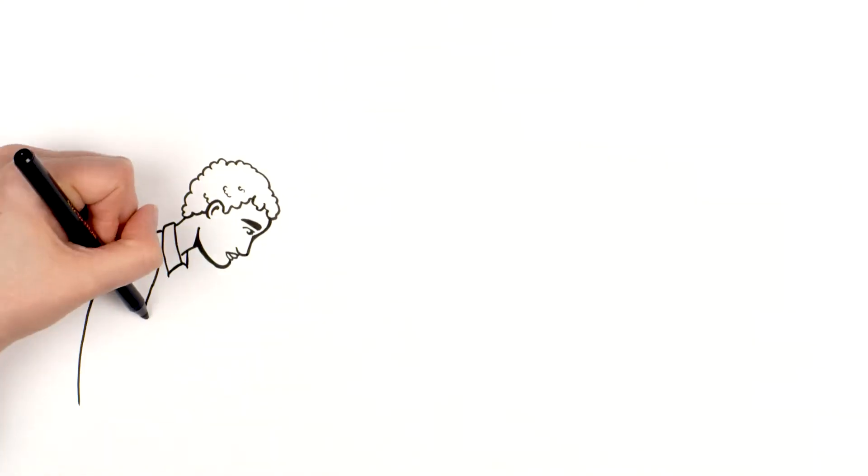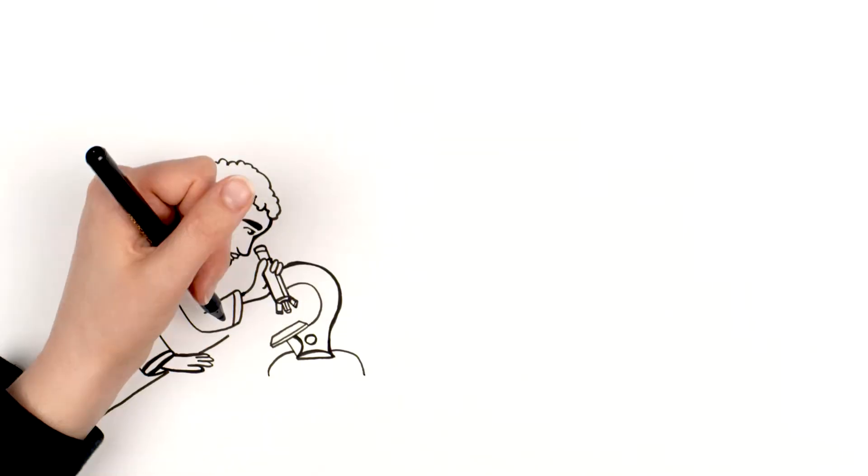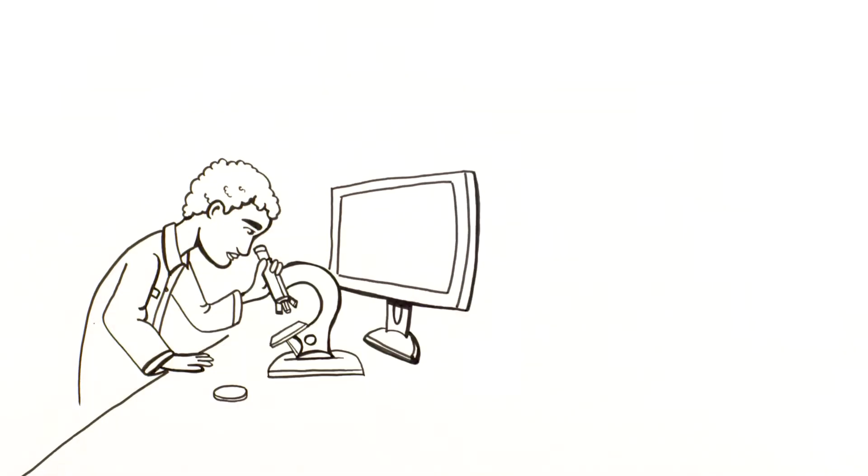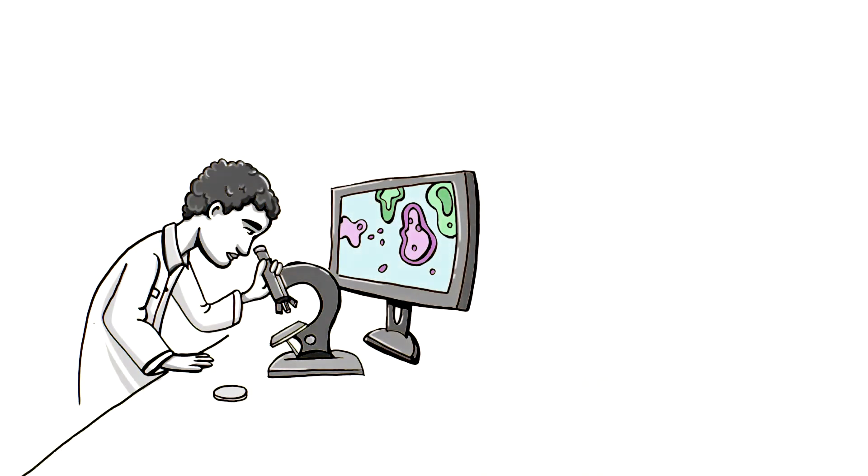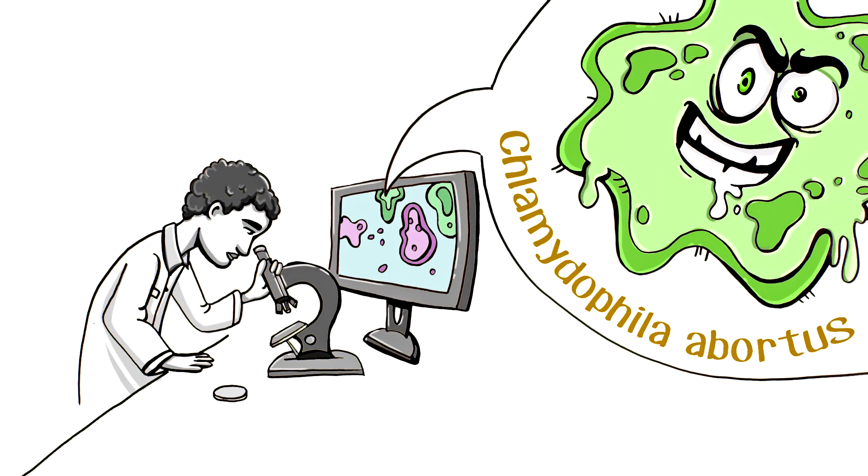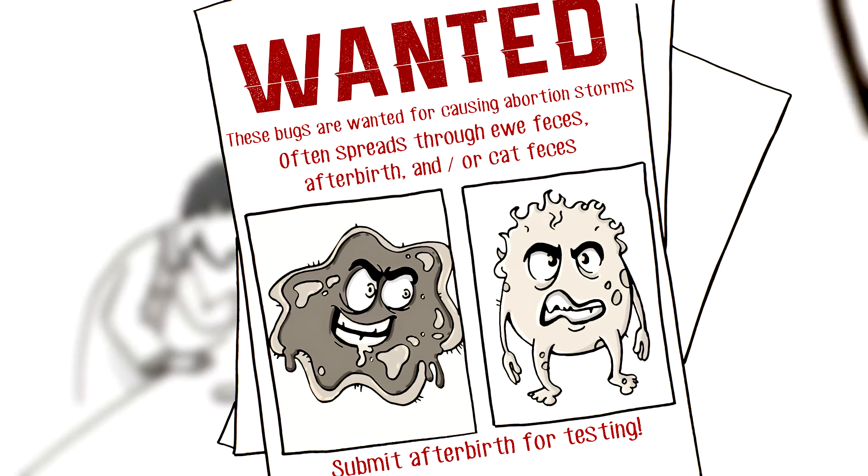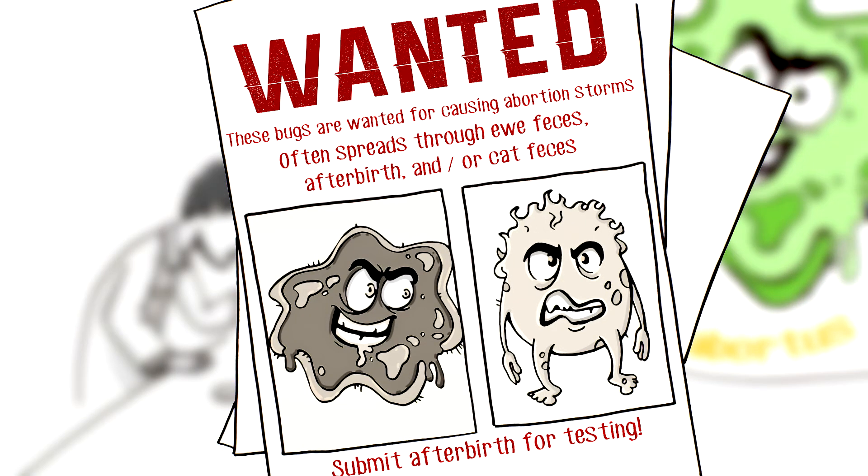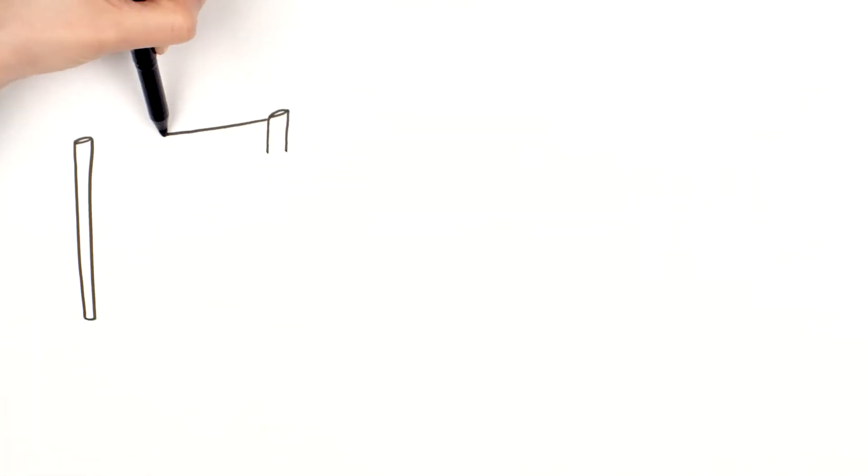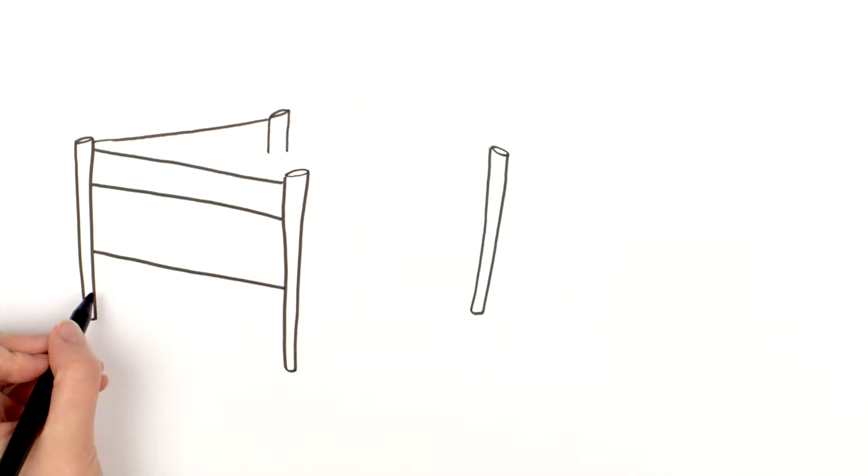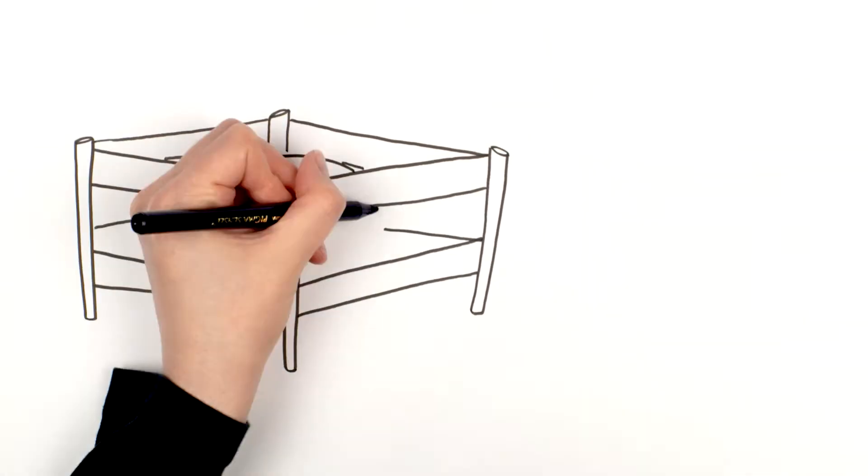After talking to my vet, one thing I wished I had done was submit lambs and their afterbirths for testing. I learned it's really important to know exactly what's causing the abortions because there are specific things that can be done depending on what the bug is. Apparently, some bugs spread through dead lambs and their afterbirths, while other abortion-causing bugs can be spread through the feces of infected ewes or even cat feces in the barn. So submitting lambs and their afterbirths for testing is crucial to make a plan of action.